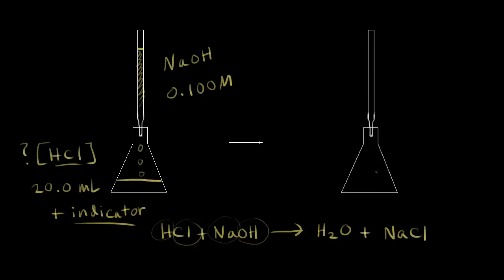We add a certain volume of base, and we see our solution turn light pink and it stays light pink. That means all of the acid has been neutralized by the base. We have a tiny amount of excess base present, and that's causing the acid-base indicator to remain pink. A tiny excess of base means we've neutralized all of the acid present.